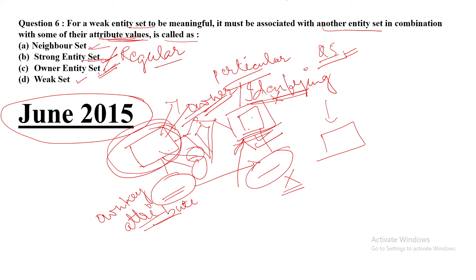Option A, 'never set', is not any type of entity set. Option D, 'weak set', is also not any type of entity set. Note that 'weak entity set' exists, but 'weak set' alone is not a valid entity set type.